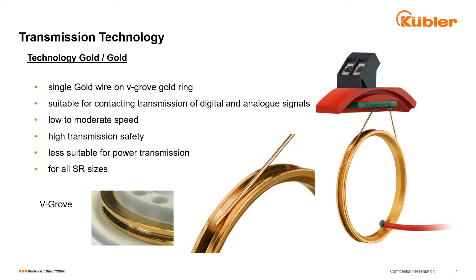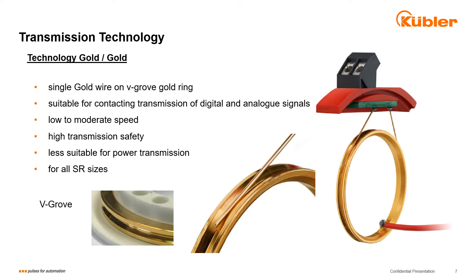Gold coatings are widely used in static connection technology. With slip rings, this type of electroplating is only one method of ensuring reliable signal transmission. It is usually a gold-plated spring-type wire or a pure gold wire that runs on a gold-plated ring with a V-guide groove. This technology is suitable for low-speed applications and offers the possibility for a quite narrow axial arrangement, leading to shorter slip rings. The electrical values of gold-gold are on a similar level to those of silver technology.